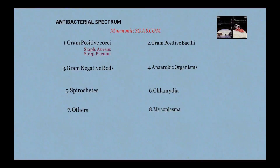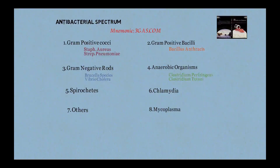Among gram-positive cocci: Staphylococcus aureus and Streptococcus pneumoniae. Gram-positive bacilli: Bacillus anthracis, which causes anthrax. Gram-negative rods: Brucella species and Vibrio cholerae, which causes cholera — for cholera, tetracycline plus gentamicin is used. Anaerobes include Clostridium perfringens, causing gas gangrene, and Clostridium tetani, causing tetanus.